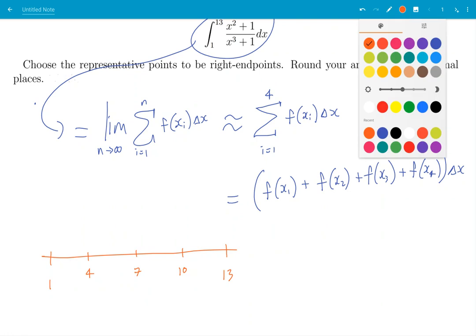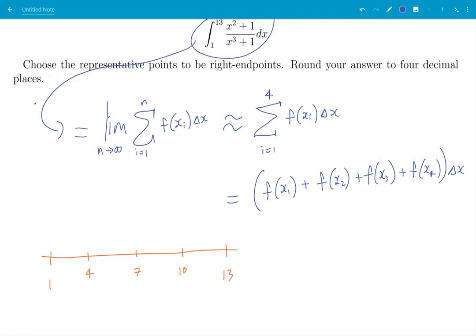And then we're told to use right endpoints. So what does that mean? We're going to use this one, this one, this one, and this one, that is right endpoints. If we were doing left endpoints, then you wouldn't use the 13, you'd use the one. But we're doing right endpoints, so we use 4, 7, 10, and 13.